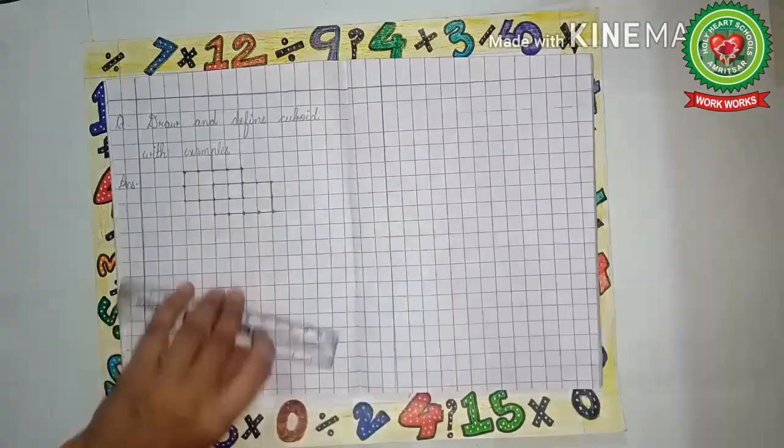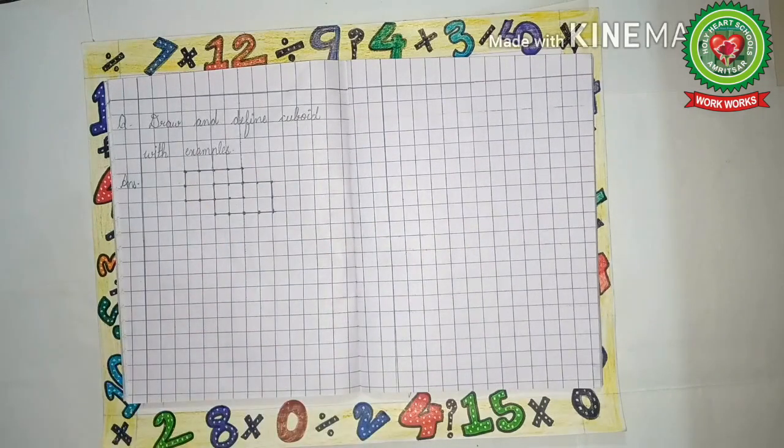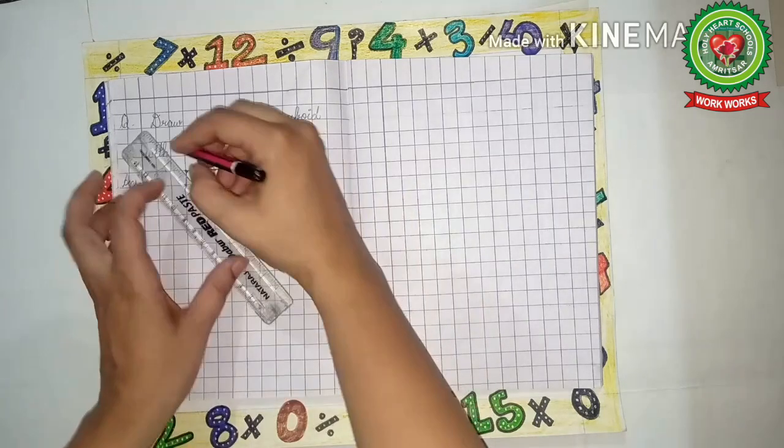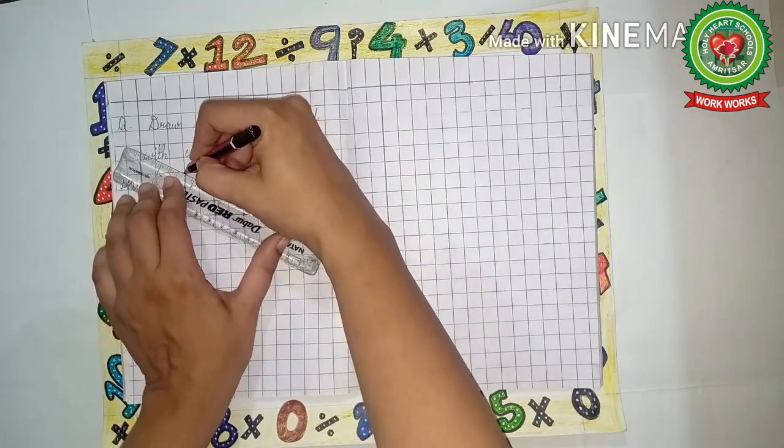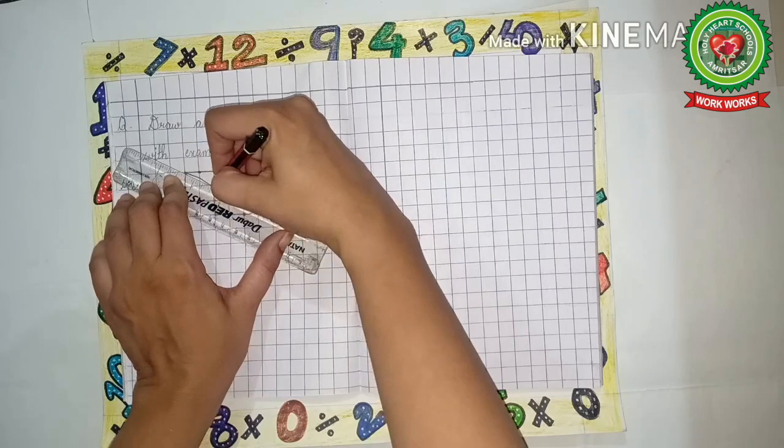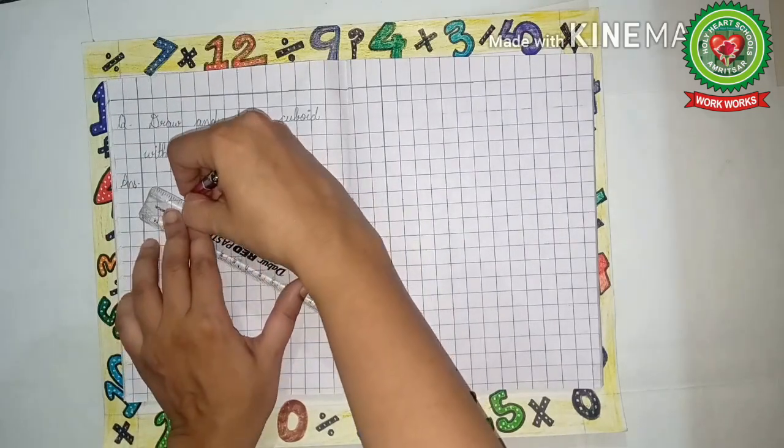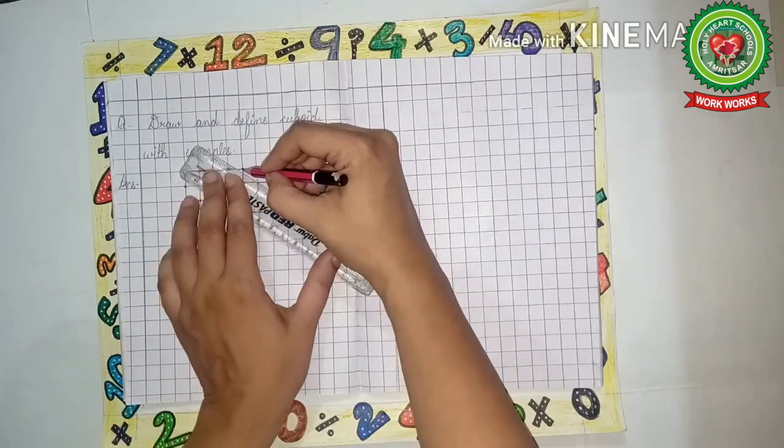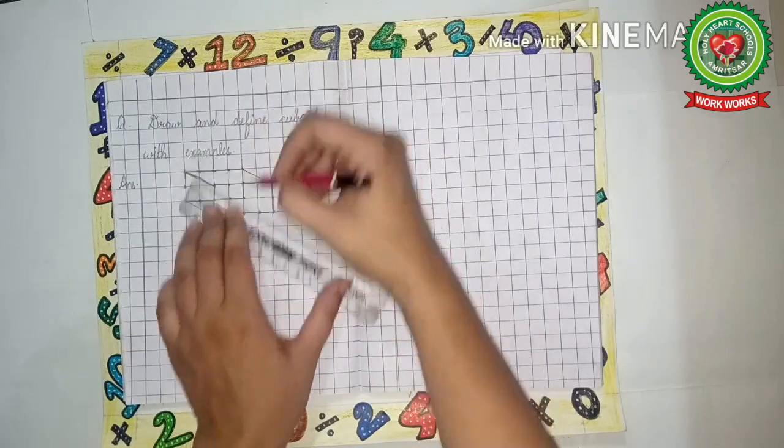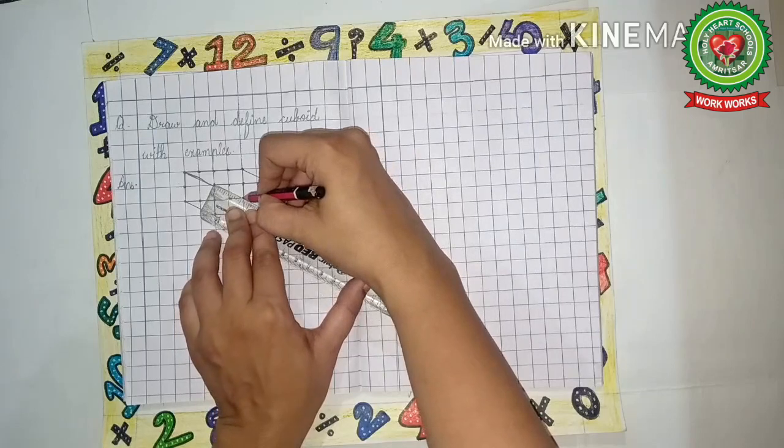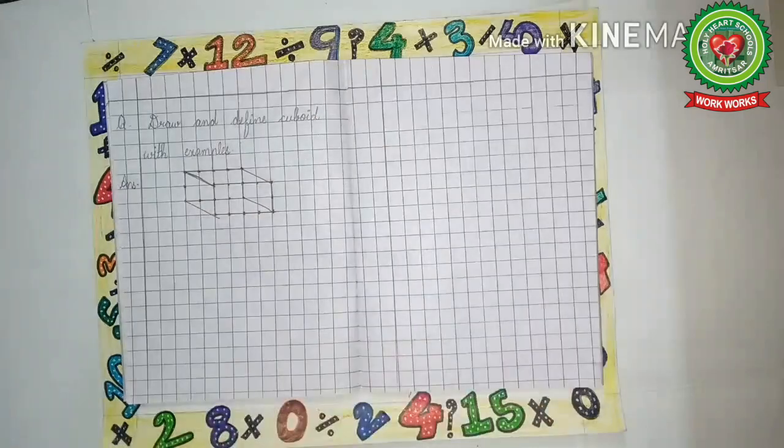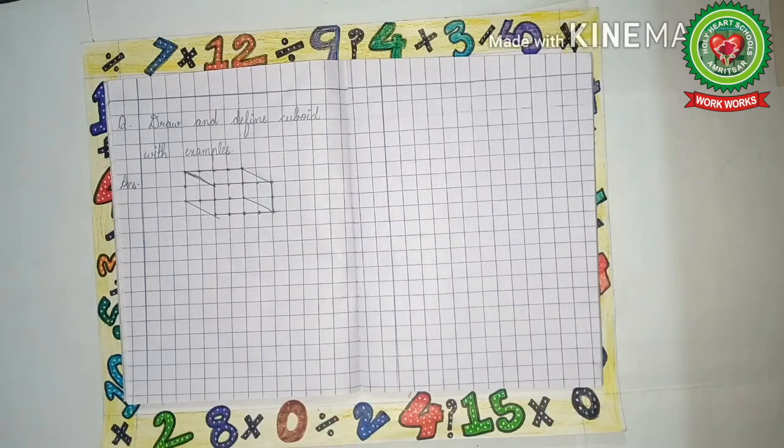Clear? Now we will join the corners of first and second rectangle. First we will join this corner with this corner, then we will join this corner with this corner, then this with this, and at last this with this. In this way we will make a cuboid.